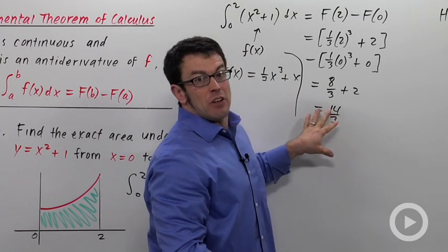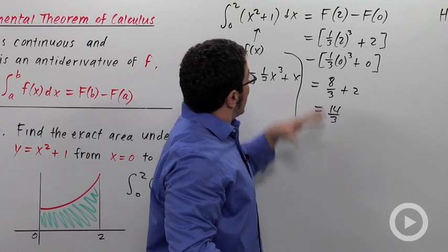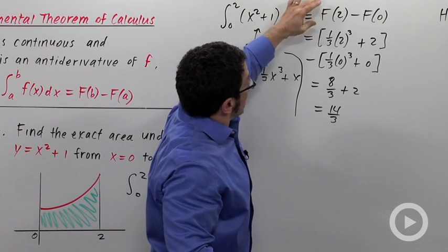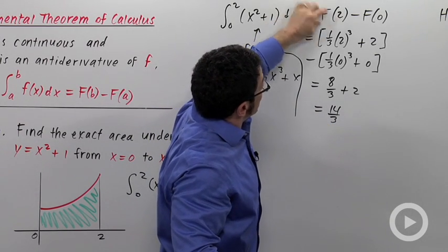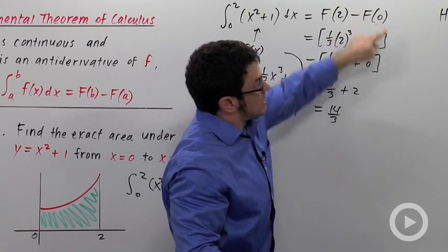This is the exact value for the area under that curve. And we got it using just a couple of calculations. The antiderivative evaluated at 2 minus the antiderivative evaluated at 0.